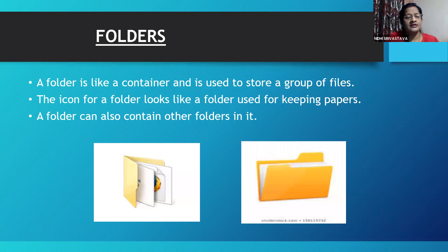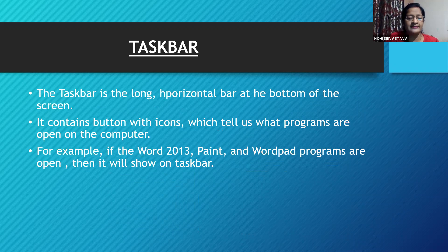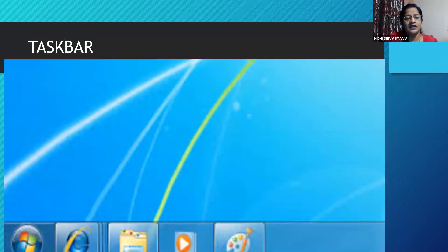The taskbar is the long horizontal bar at the bottom of the screen. It contains buttons with icons which tell us what programs are open on the computer. For example, if the Word 2013, Paint, and WordPad programs are open, then they will show on the taskbar.